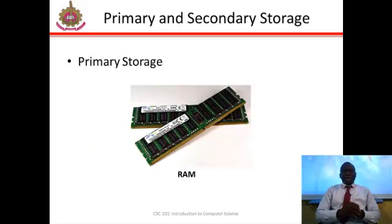Now a primary storage is also called the internal storage or memory. These store programs and data currently being processed by the CPU and it also needs electricity to stay on. That means they can be easily erased when there is power outage. An example is a RAM that is shown to you on your screen right now.